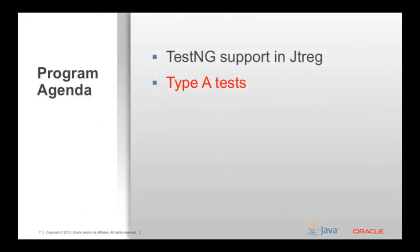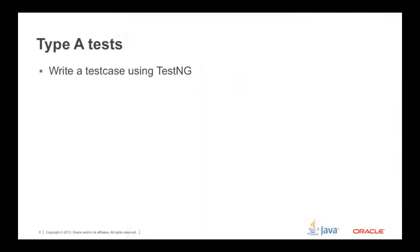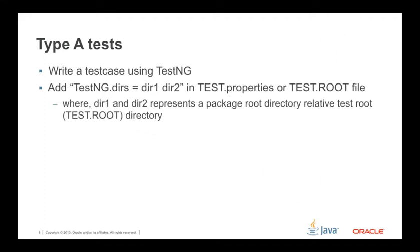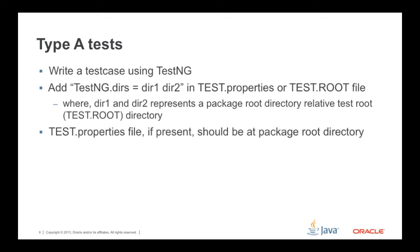Let me now show you how Type A tests are supported in JTREG. First, write a test case using TestNG in a normal way. Then add a line 'TestNG.DIRS' equal to directory names in the Test.Properties file or Test.root file, where directories DIR1 and DIR2 represent a package root directory relative to the Test.root directory. The Test.Properties file, if present, should be at the package root directory.